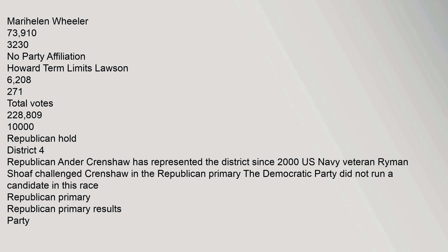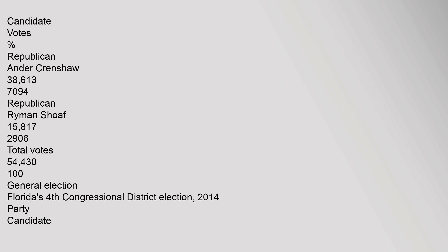District 4: Republican Ander Crenshaw has represented the district since 2000. U.S. Navy Veteran Ryman Shof challenged Crenshaw in the Republican primary. The Democratic Party did not run a candidate in this race. Republican Primary Results: Ander Crenshaw 38,613 (70.94%), Ryman Shof 15,817 (29.06%). Total Votes 54,430. General Election: Republican Ander Crenshaw 177,877 (78.28%), No Party Affiliation Paula Moser Bartlett 35,663 (15.69%), No Party Affiliation Gary L. Connors 13,690, Right in Deborah Katz Puchel 13,001.